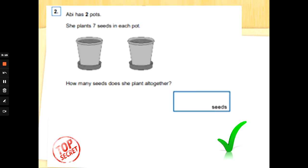Abby has two plot pots. She plants seven seeds in each pot. Seven add seven, or seven times two or double seven. How many seeds does she plant all together? You could draw seven dots on each pot, or you could use what you know about multiplication to realize this is seven times two or double seven. Seven fingers up and counting twos. Two, four, six, eight, ten, twelve, fourteen. There would be fourteen seeds all together.